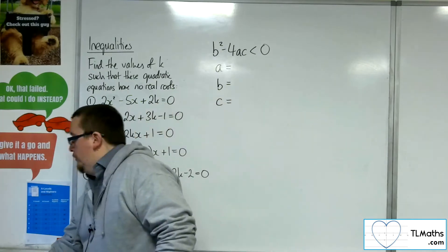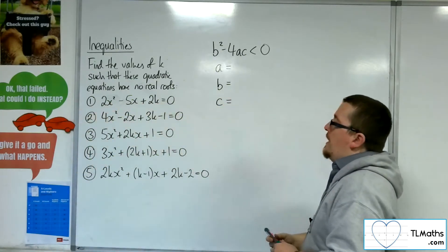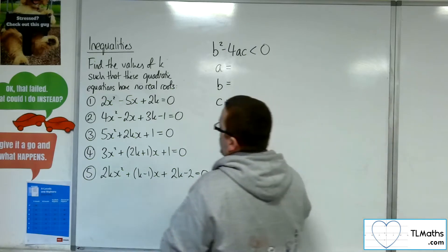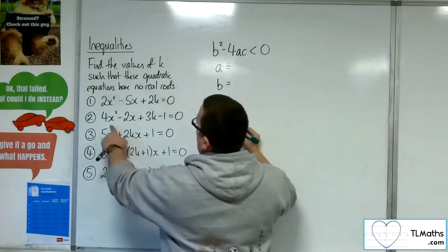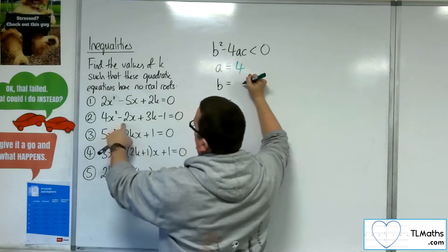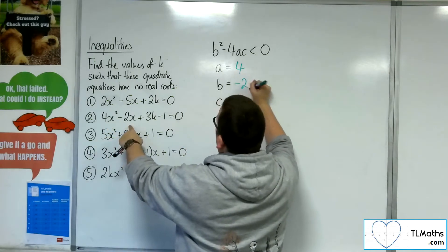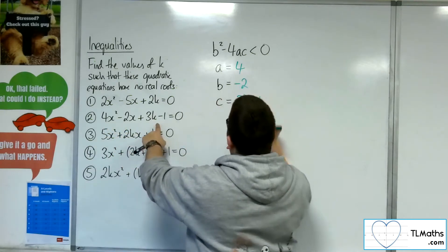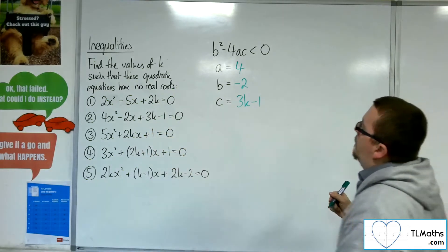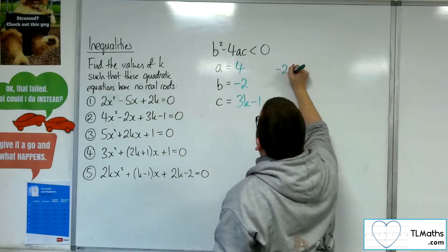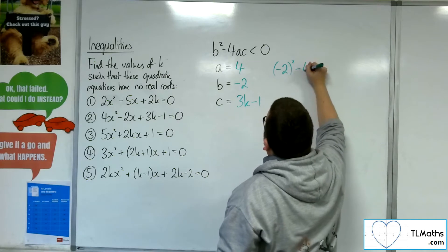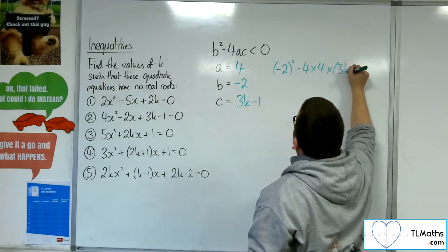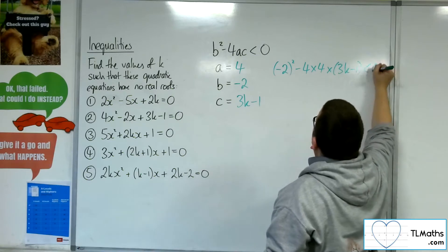Let's have a look at number two: 4x squared take away 2x plus 3k minus 1 equals zero. So A is the coefficient of x squared, B is the coefficient of x, and C is whatever you've got left over — the 3k minus 1. So we're going to have B squared — minus 2 squared — take away 4 lots of A times C, and that's got to be negative.